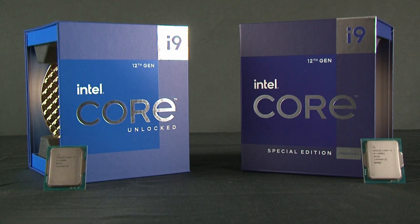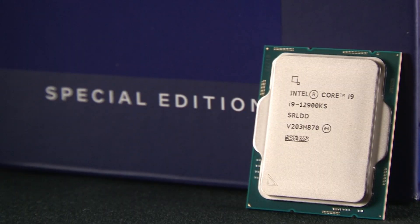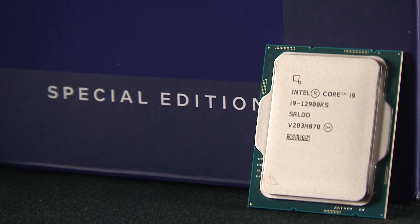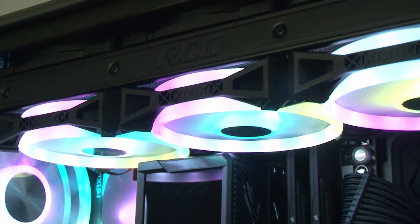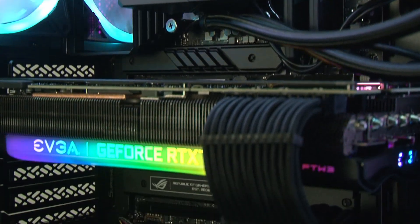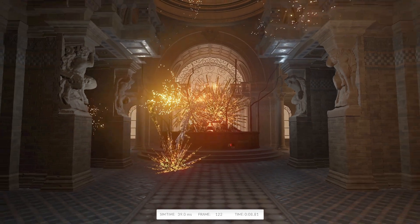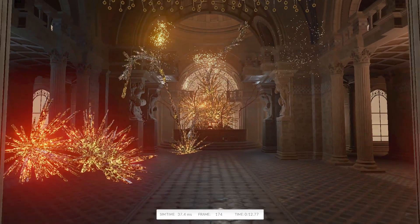But just how much performance increase are we getting between the K and the KS model? Thanks to Intel, we were able to get our hands on the KS model and compare it to our K model. Our test system consists of an ASUS ROG Z690 Maximus Hero motherboard, 32GB of Corsair 5600MHz DDR5 memory, an ASUS ROG 360mm all-in-one liquid cooler, and an EVGA RTX 3090. The system is running on the latest version of Windows 11 with all the latest drivers and BIOS installed at the time of testing. Our benchmarking method is the best of three runs with each benchmarking tool, at both stock settings and with ASUS AI Overclock enabled.